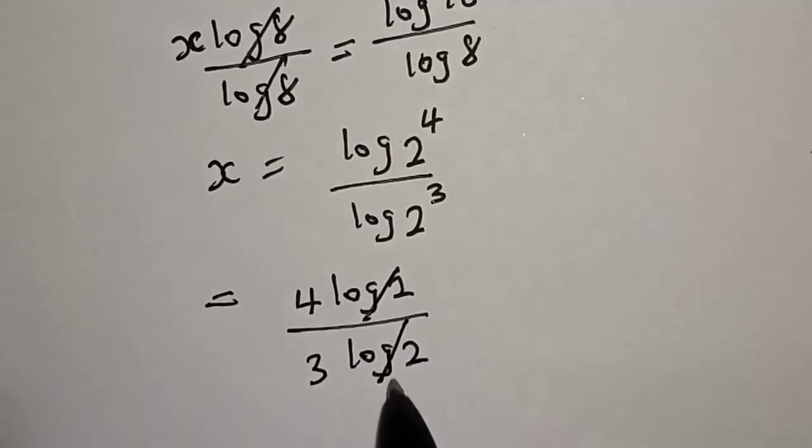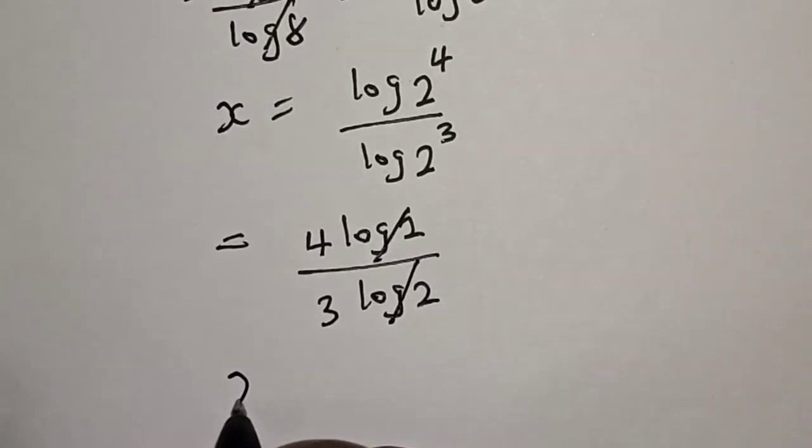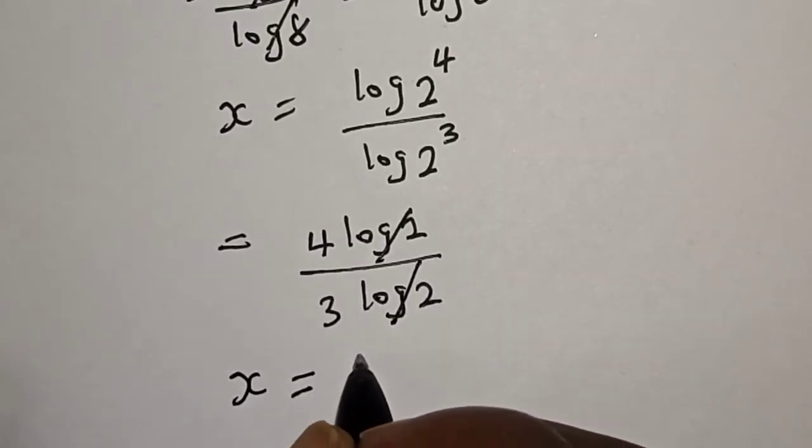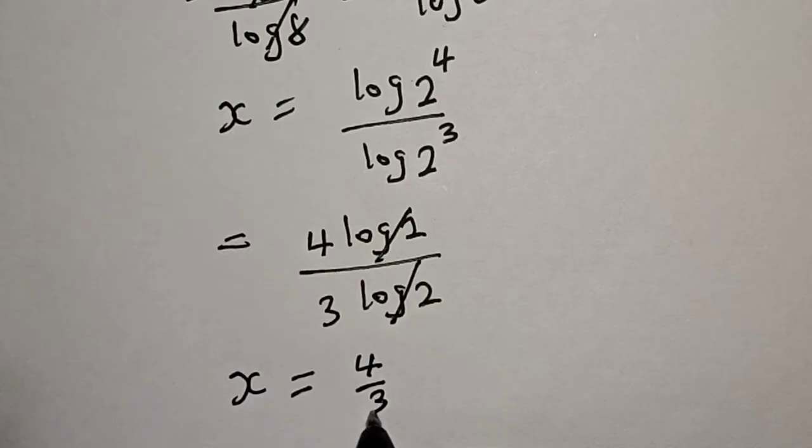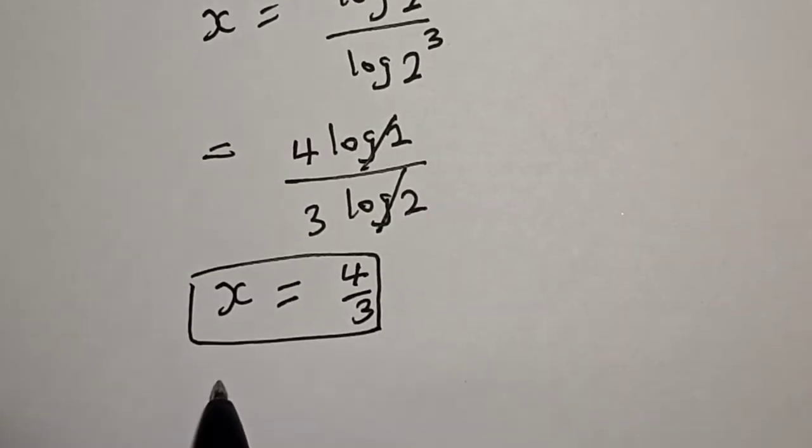Then, log 2, we cancel log 2. Therefore, x is equal to 4 over 3. That is our final answer. Let's solve it using the second method.